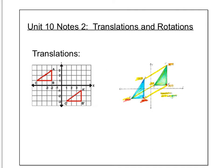Hi everyone, this is Mrs. Snowbeck. Today we're going to do Unit 10, Notes 2, and we're going to talk about two things: translations and rotations. These are two more types of transformations that can happen to shapes.